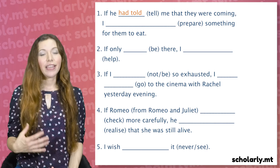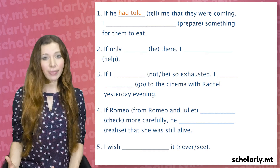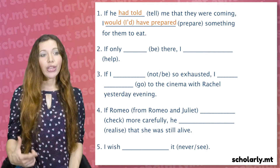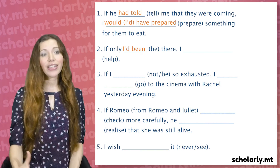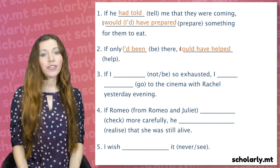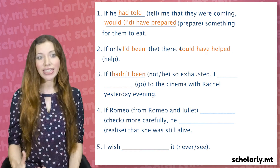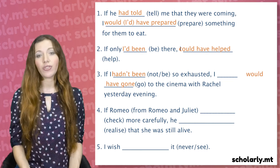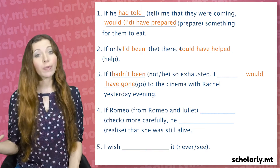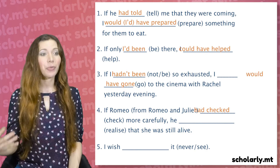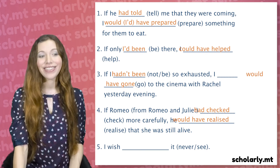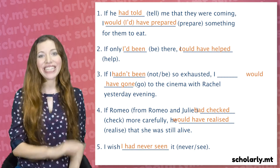Number one: If he had told me that they were coming, I would have prepared something for them to eat. Two: If only I'd been there, I could have helped. Three: If I hadn't been so exhausted, I would have gone to the cinema with Rachel yesterday evening. Four: If Romeo from Romeo and Juliet had checked more carefully, he would have realized that his Juliet was still alive. Five: I wish I had never seen it.